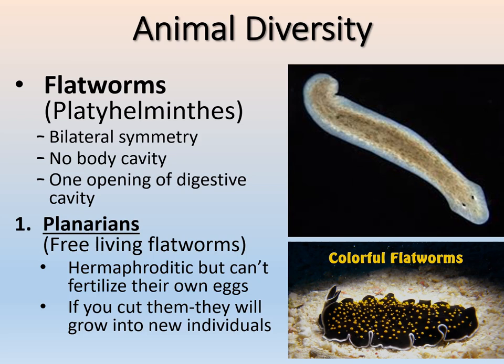The first group of flatworms is planarians — free-living flatworms. Interestingly, they are hermaphroditic: they produce both female and male gametes, but cannot fertilize their own eggs. They still require other individuals for sexual reproduction. Also interesting: if you cut them, they will grow into new individuals — a form of asexual reproduction, since they can make a copy if cut in half. There are some very colorful, cool flatworms in the ocean as well.